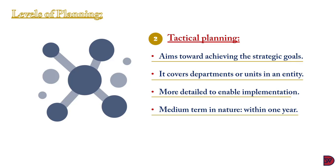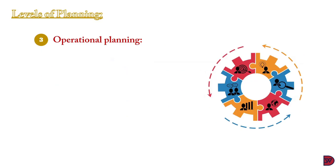Tactical planning is medium-term in nature, up to a year to see its plans to fruition. It is set by high to mid-level management, usually by CEOs or Managing Directors, in addition to general and line managers.